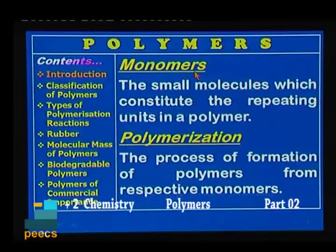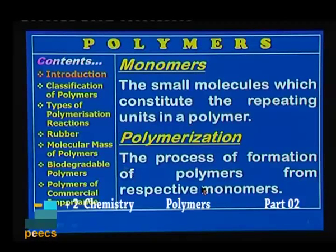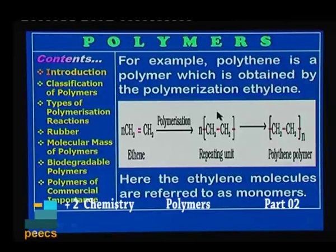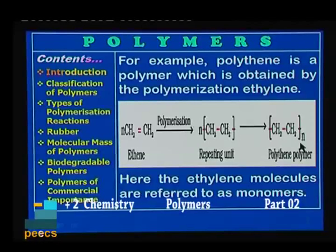What are these monomers? The small molecules which constitute the repeating units in a polymer are called monomers. What is polymerization? It is a process of formation of a polymer from the respective monomers. For example, let us take the case of polythene. It is a polymer obtained by the polymerization of ethylene. Ethylene molecules undergo polymerization to form polythene or polyethylene. Here, ethylene molecules are referred to as the monomers.